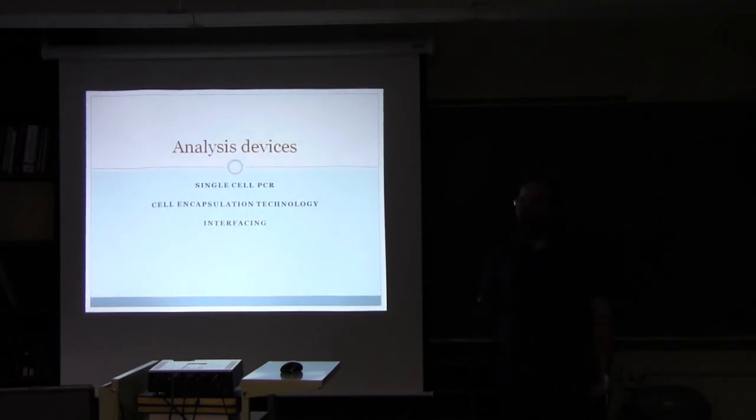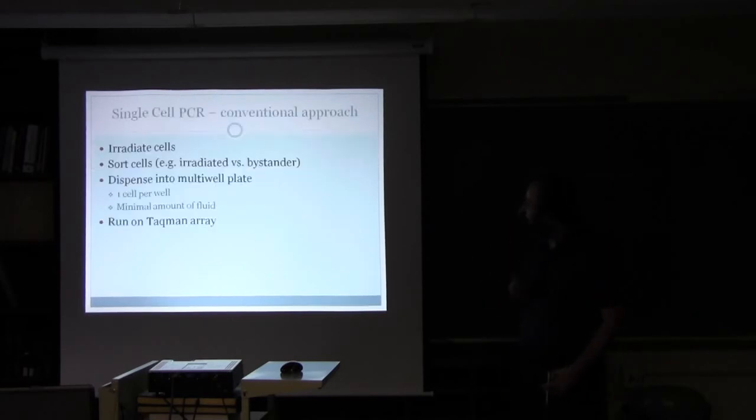Now that we've been able to irradiate our cells or our worms, what do we do with them later? As an example, I'm going to show a single-cell PCR technology, which is what Brian Ponnaiya is really interested in putting online. The way he does it now is irradiate cells on a regular microbeam dish and then go in with a micromanipulator, pull specific cells out, dispense them into a multi-well plate, one cell per well, and then run them on a Taqman array. But this is a lot of handling of single cells. You have to be very careful with how you do it. It's time-consuming.